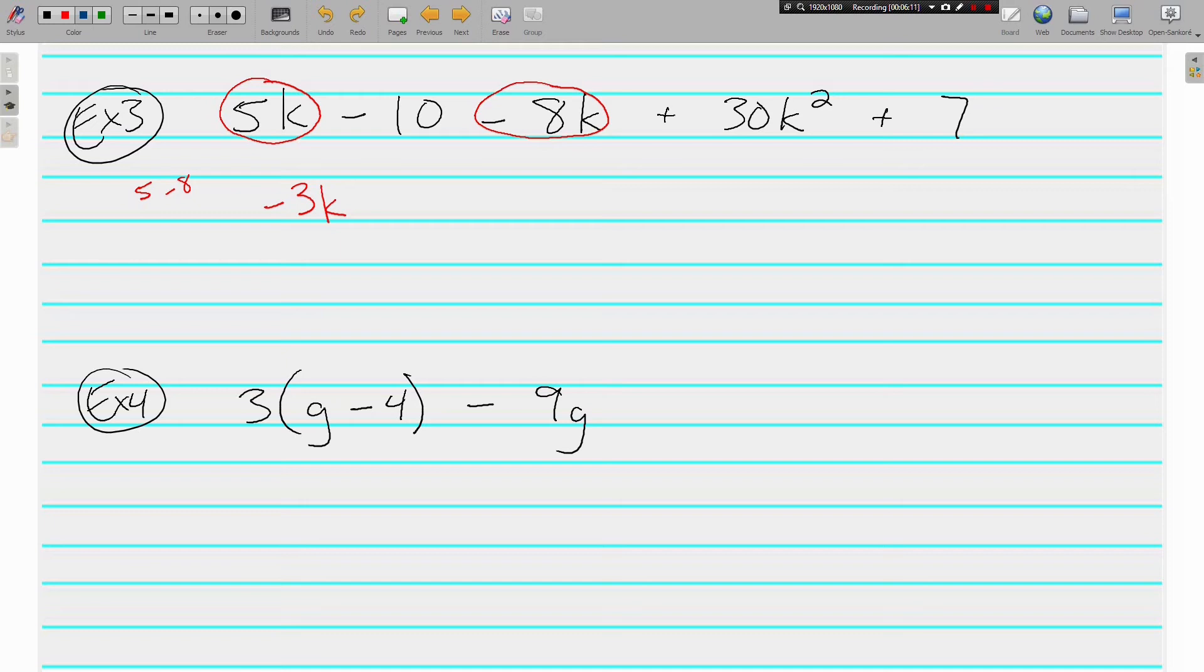What else do I have? I have a negative 10. I might underline this time. Negative 10 and positive 7. Negative 10, positive 7. Negatives are going to win that too. Negatives win by 3. And then I also have this guy. My positive 30k squared. I couldn't combine that with anything. That's okay. It still is going to be a part of your simplified expression.